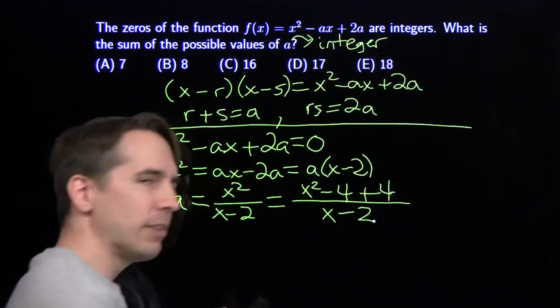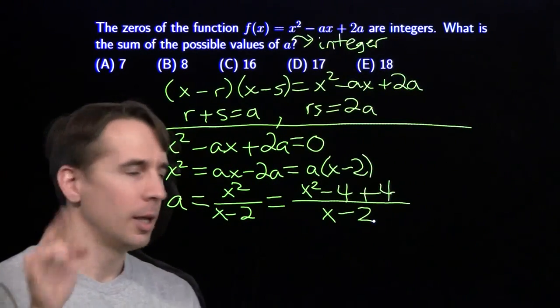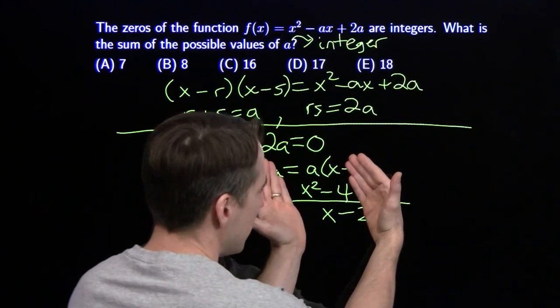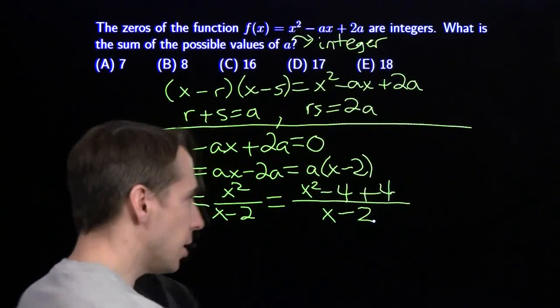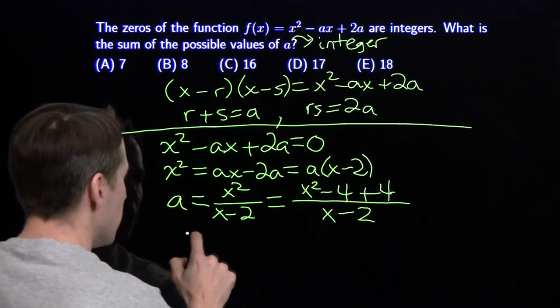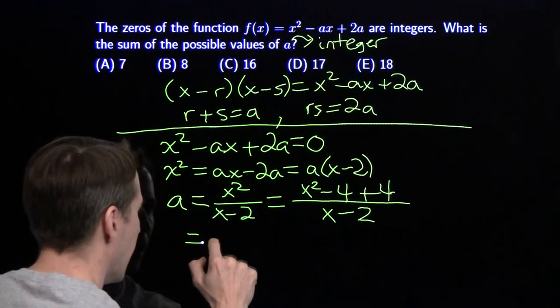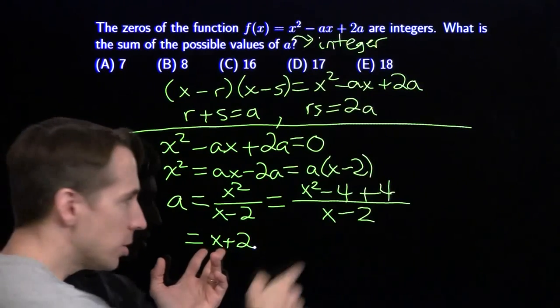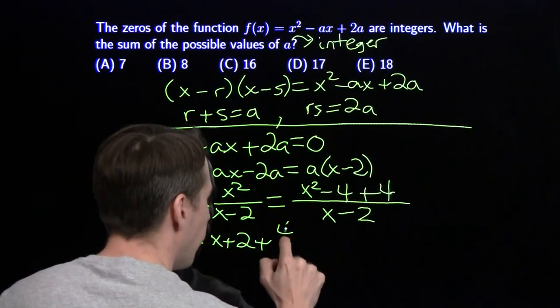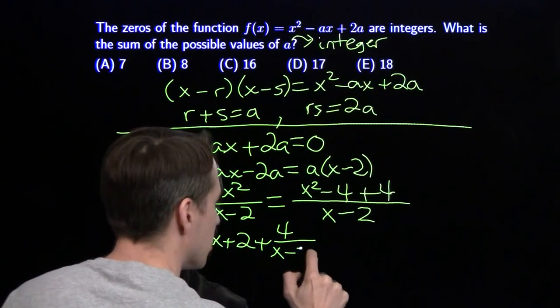Now I've got both my wishes. I've got cancellation and an integer divided by x - 2. Let's simplify: x² - 4 over x - 2 simplifies to x + 2, plus 4 over x - 2.